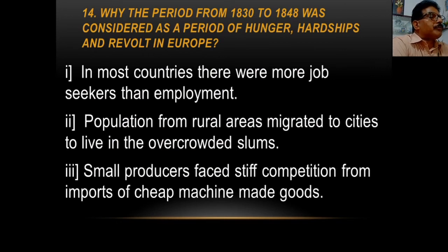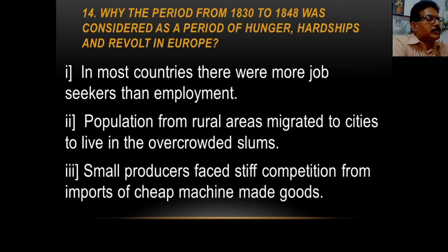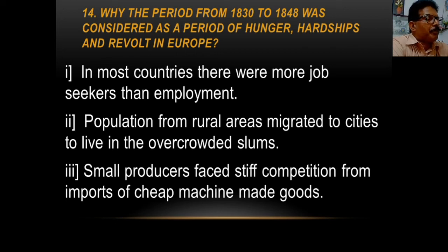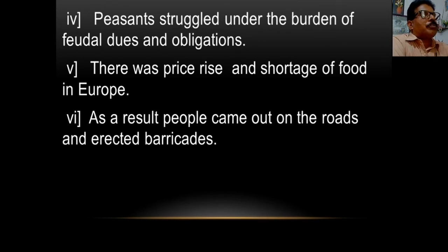Why was the period from 1830 to 1848 considered a period of hunger, hardships and revolt in Europe? In most countries there were more job seekers than employment — people suffered from unemployment. Population from rural areas migrated to cities to live in overcrowded slums. Small producers faced stiff competition from imports of cheap machine-made goods. Peasants struggled under the burden of feudal dues and obligations — they had to pay taxes and do free labour.